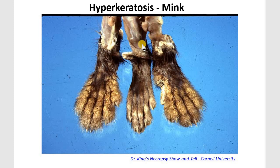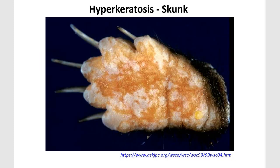Canine distemper virus can infect other animals in the mustelid family. This is an example from a mink — a control animal versus one with hyperkeratosis of the footpad. And this is an example from a skunk.